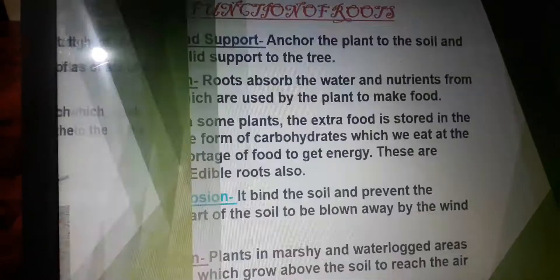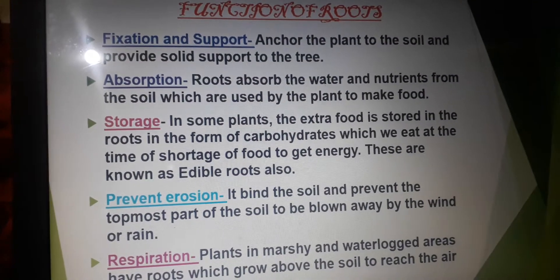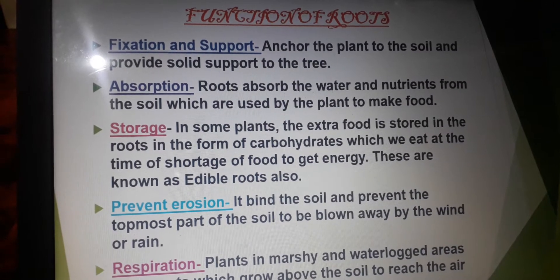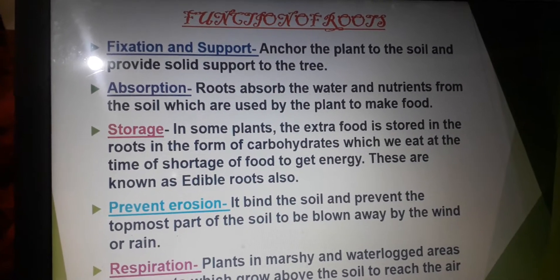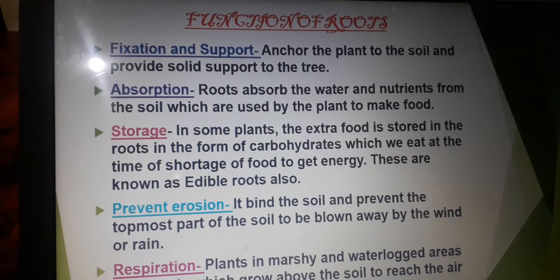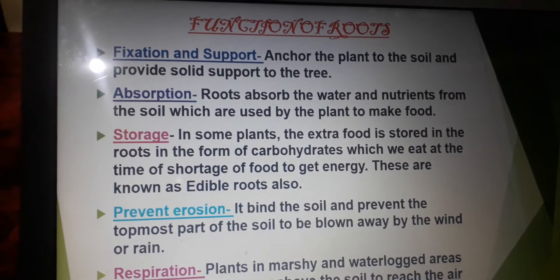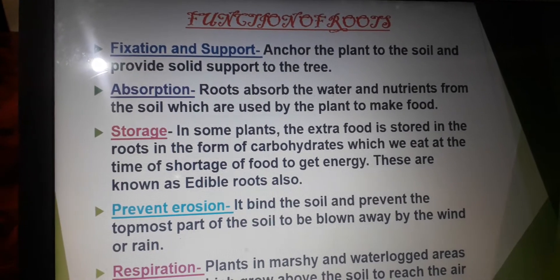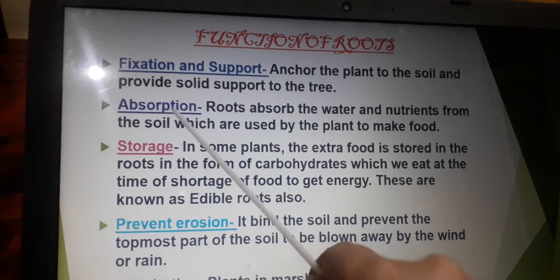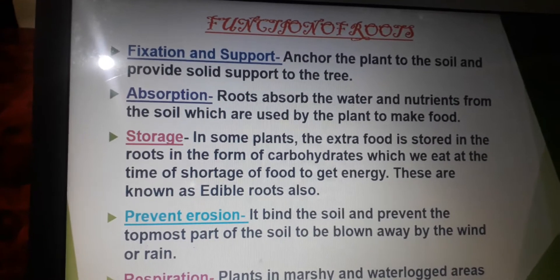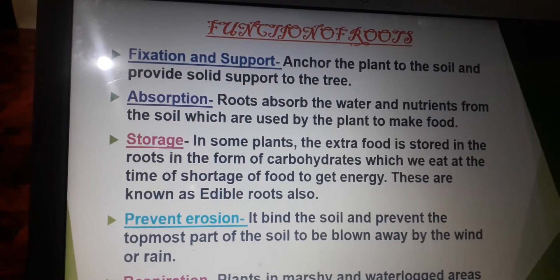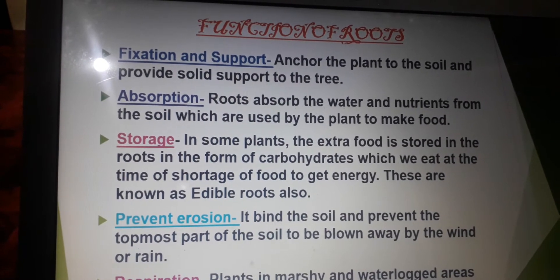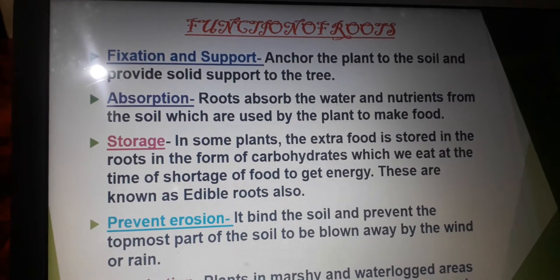Now we will discuss about the functions of roots. The first one is fixation and support. The main function of the root is to anchor the plant to the soil and provide solid support to the tree. Next is absorption — roots absorb water and nutrients from the soil. This is used by the plants to make food by the process of photosynthesis.